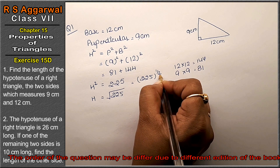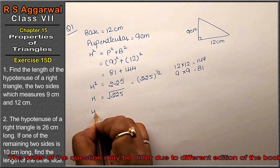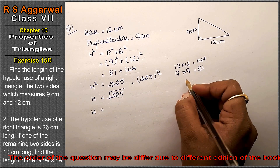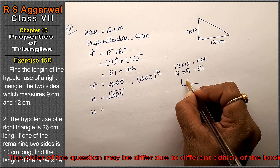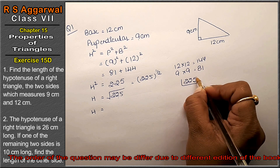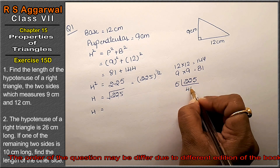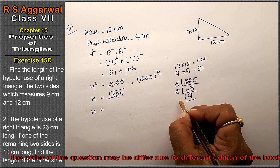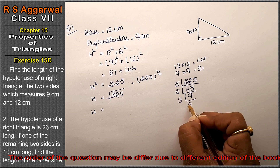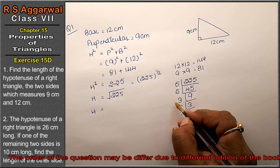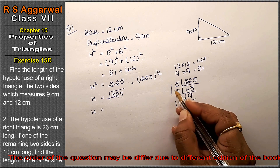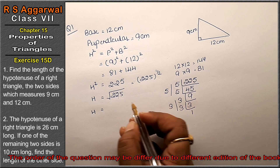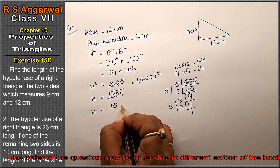So H equals the square root of 225. To find the square root, we take the factors of 225: 5 times 5 times 9, which gives us 5 times 5 times 3 times 3. We make pairs and write one from each pair — that gives us 5 and 3. Multiplying both, the answer is 15 cm.